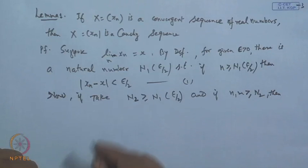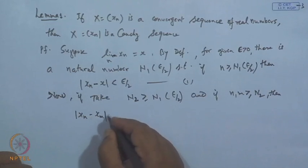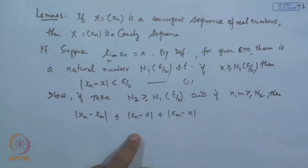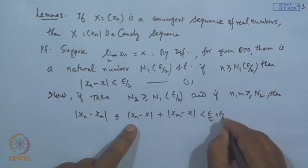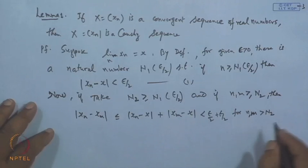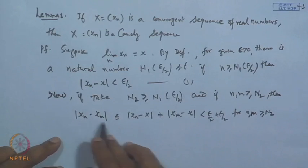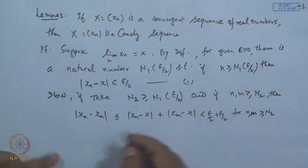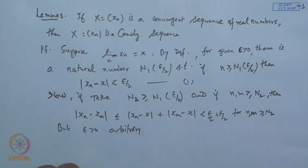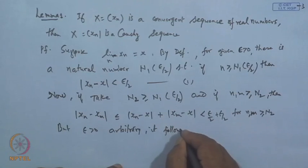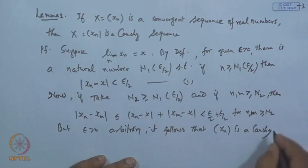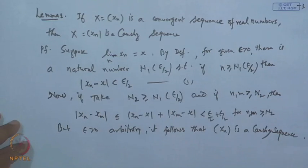Then |x_n − x_m| ≤ |x_n − x| + |x_m − x| by the triangle inequality. This is less than epsilon/2 + epsilon/2 = epsilon for all n, m > N_2. Since epsilon is arbitrary, this shows the sequence {x_n} is a Cauchy sequence.